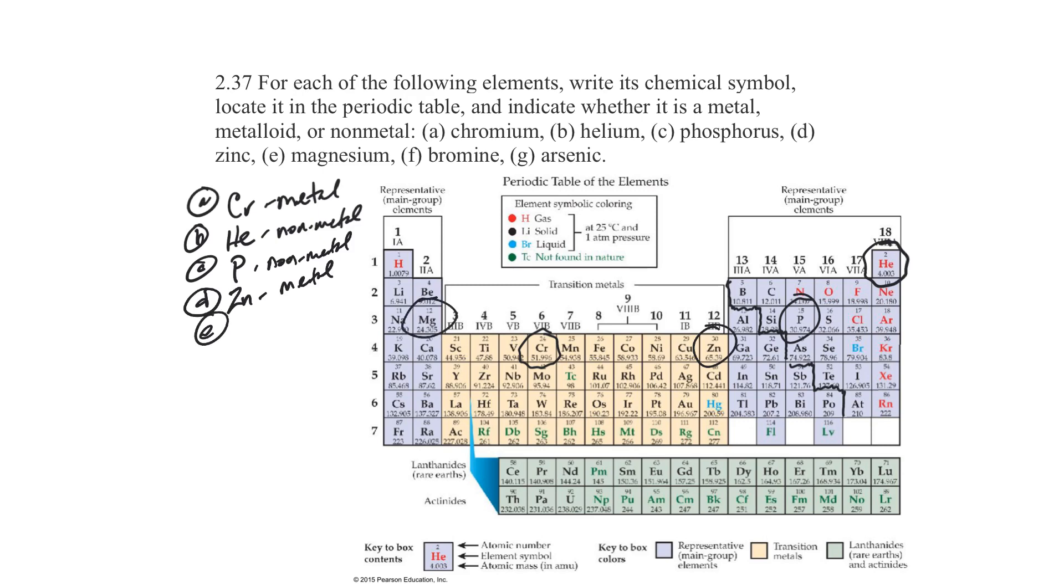Magnesium is here. Magnesium is Mg. It's a metal because it's to the left. Bromine is here. It's to the right. So Br is a non-metal.